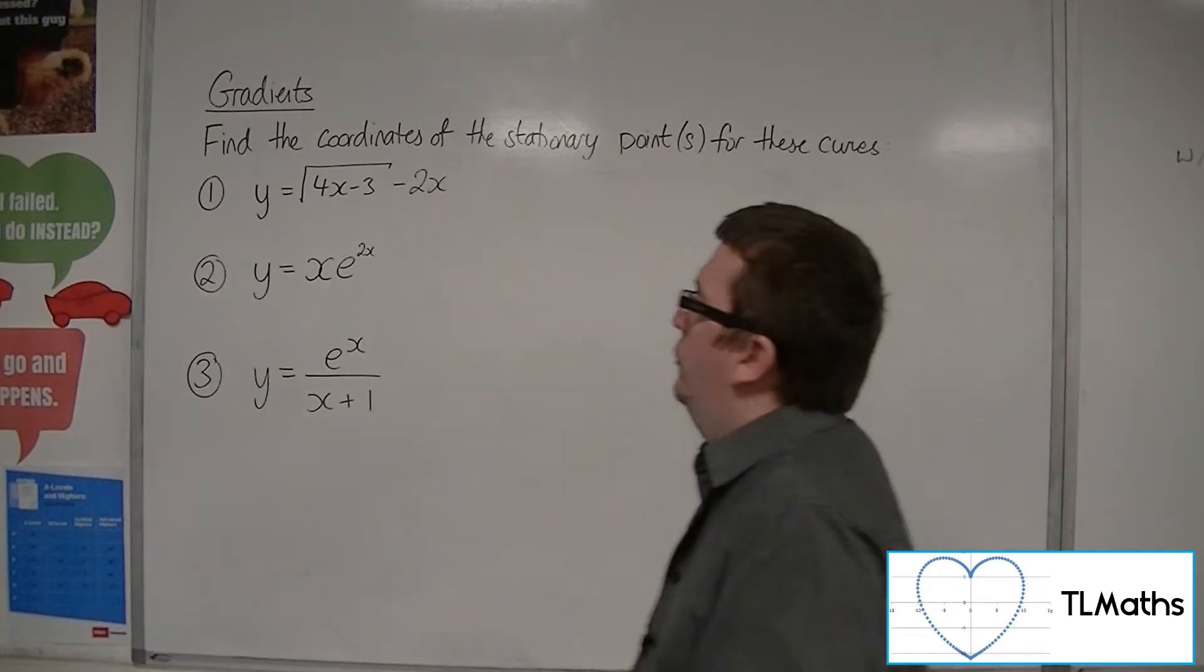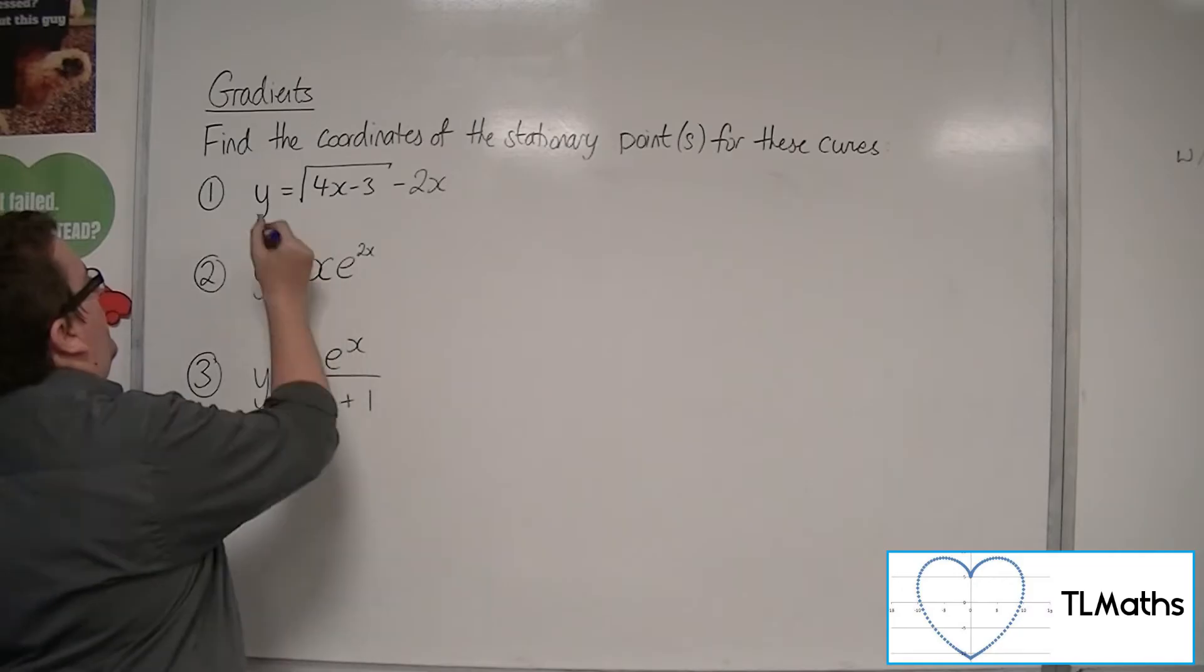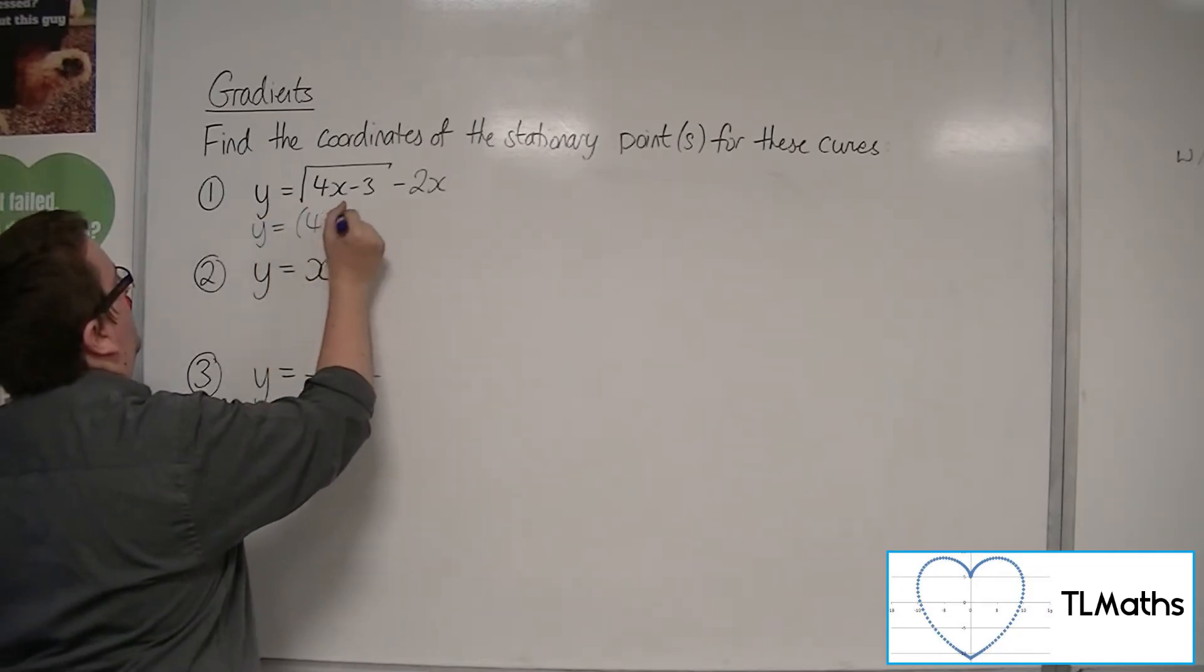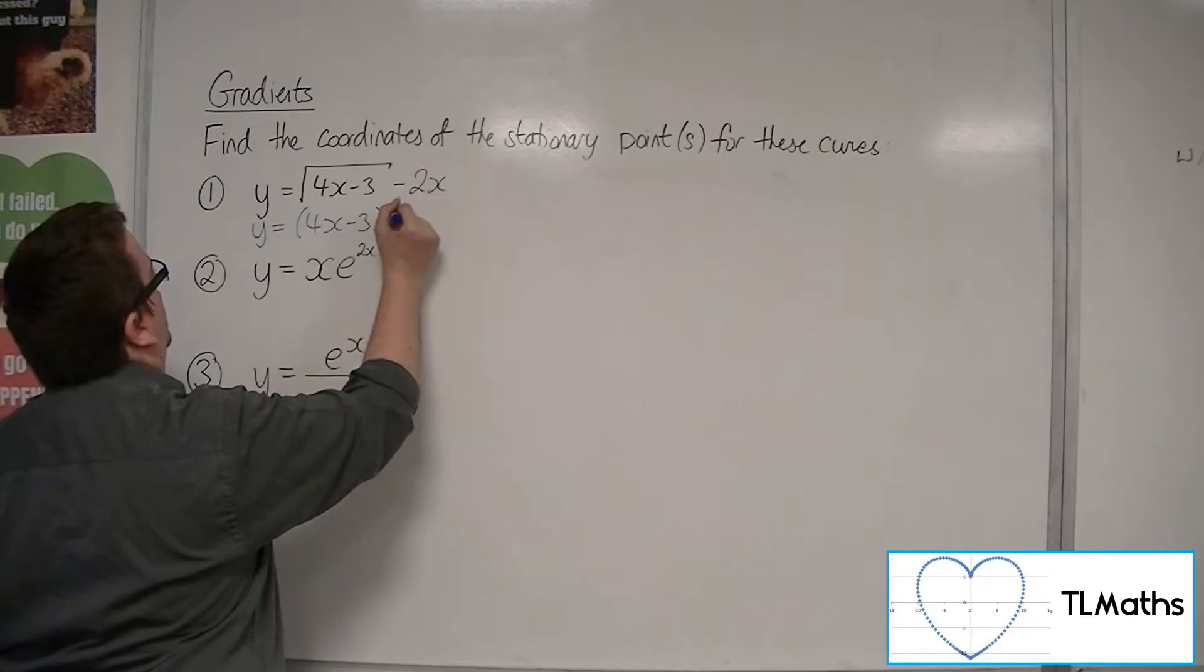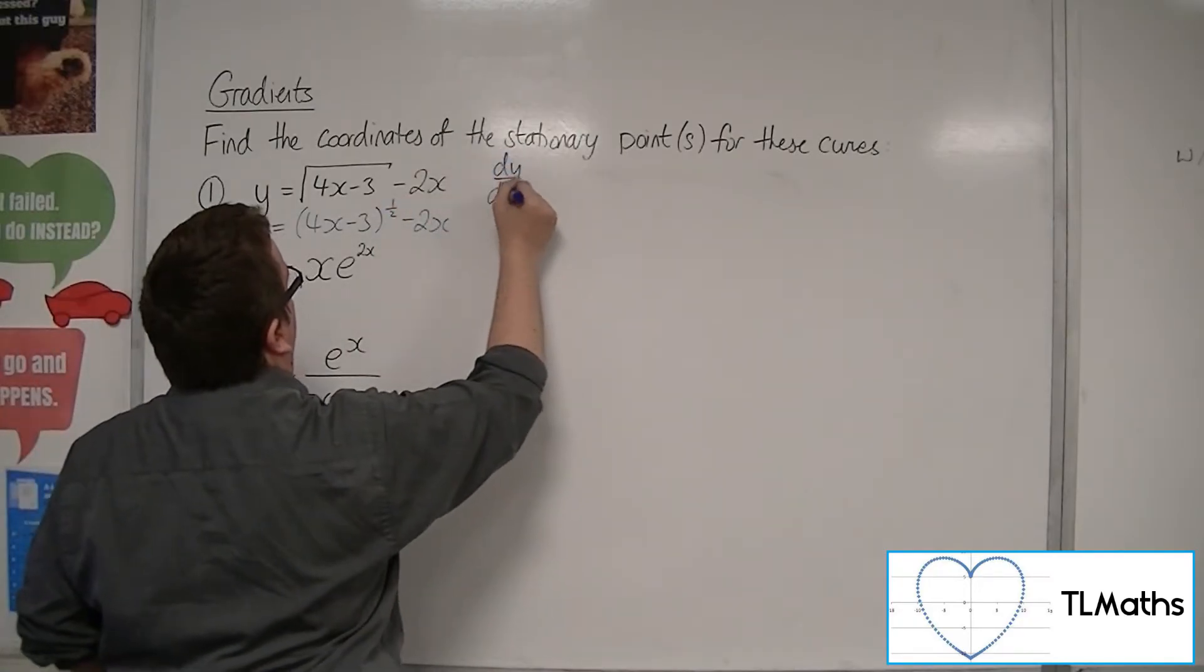So for number one, y equals the square root of 4x minus 3, take away 2x. So I'm going to rewrite that first: y equals (4x - 3)^(1/2) take away 2x, and then I'm going to differentiate it.